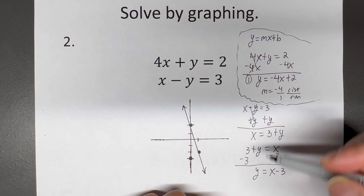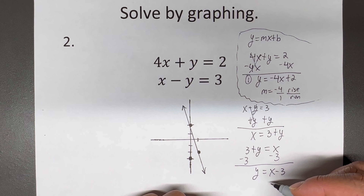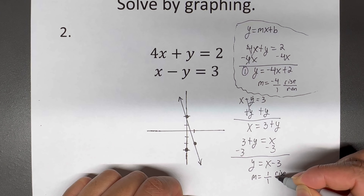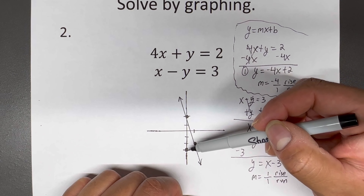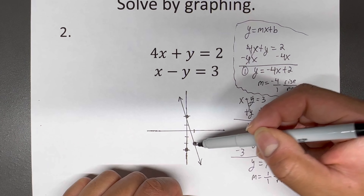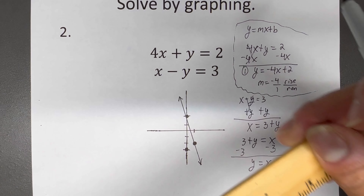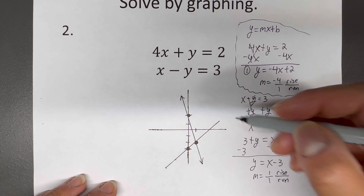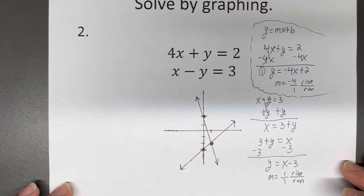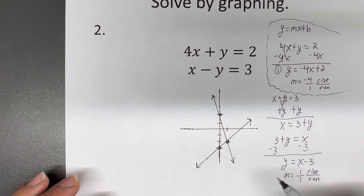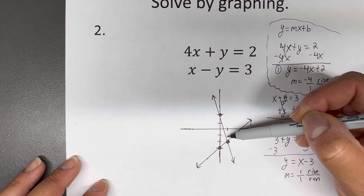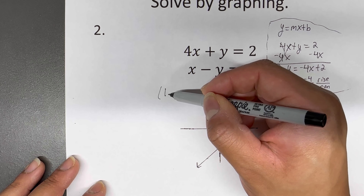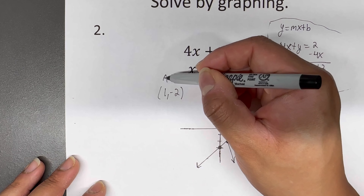Now the M is in front of the X — there's nothing there, so in algebra that means it's one, giving us a slope of one over one, which is rise over run. From the Y-intercept at negative three, I go up one and to the right one, then connect the dots for our second line. The intersection is at (1, -2), which is the answer.